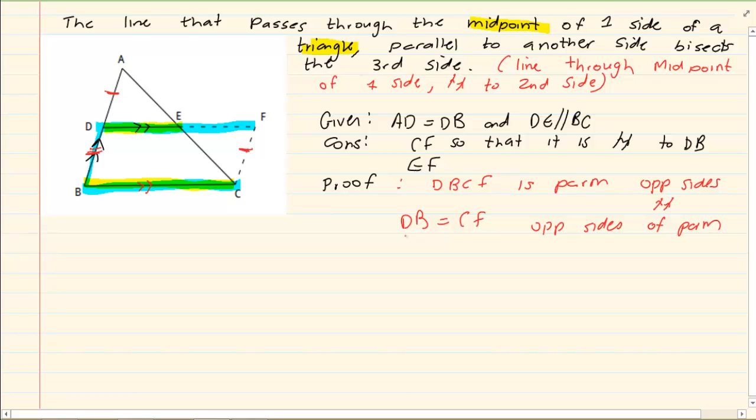But we also have that DB is equal to AD. That was given to us right in the beginning. So what can we conclude? That CF is equal to AD. So now I am talking about this line here and this line here.